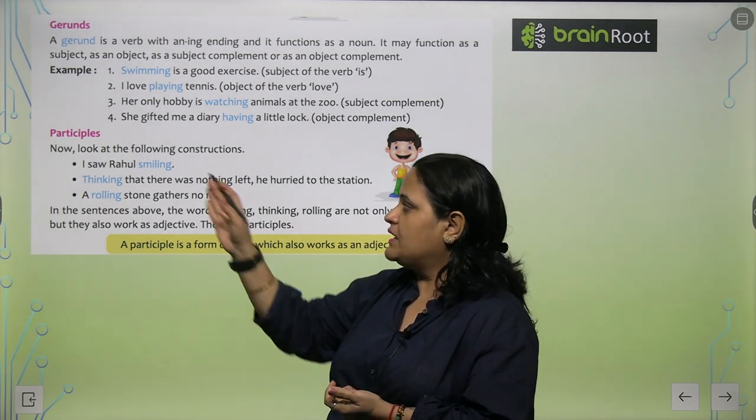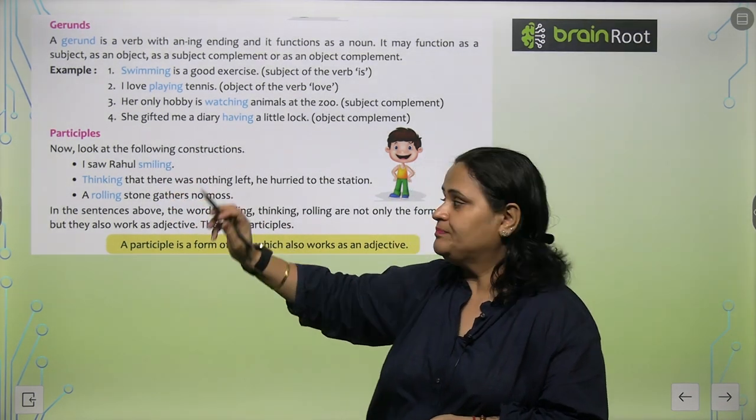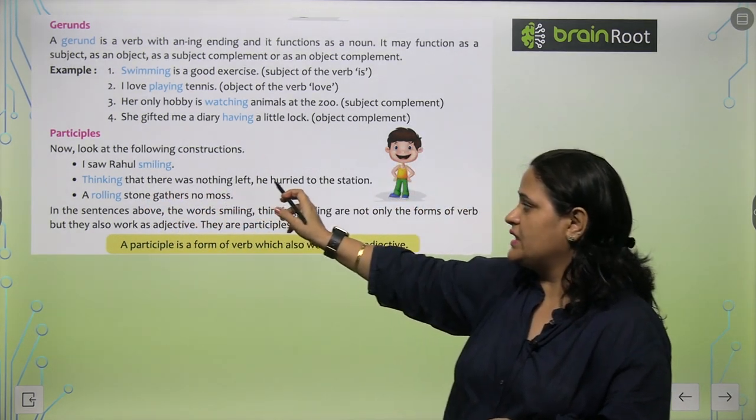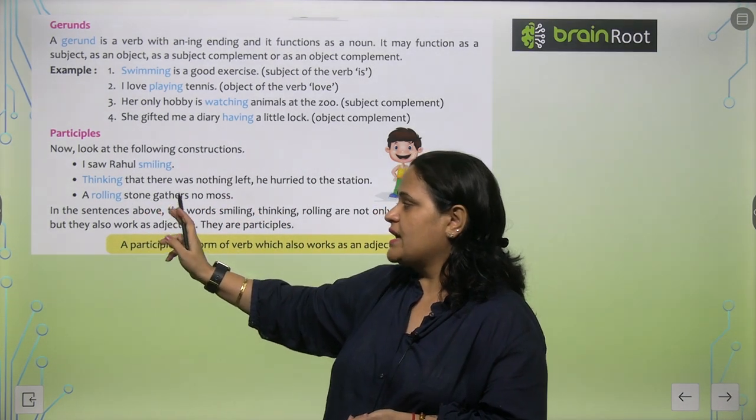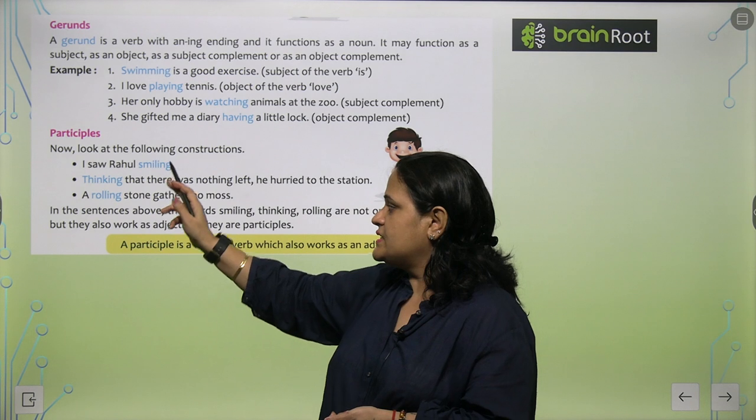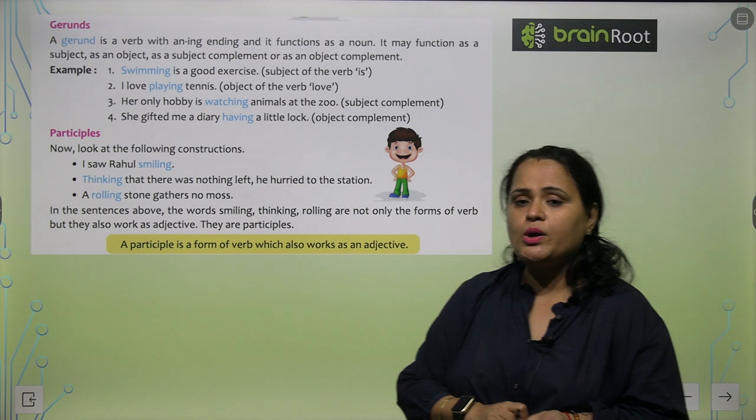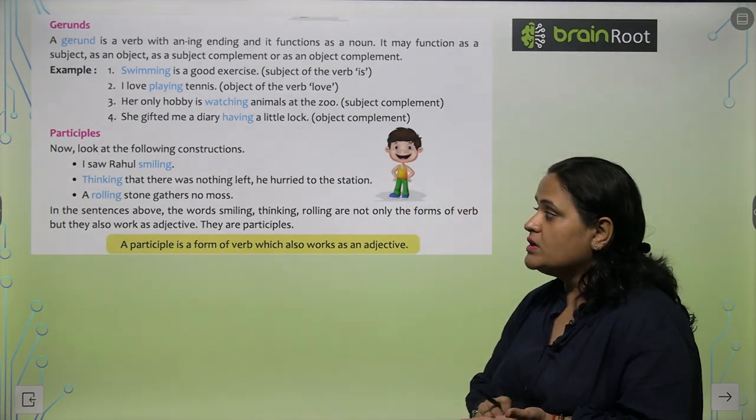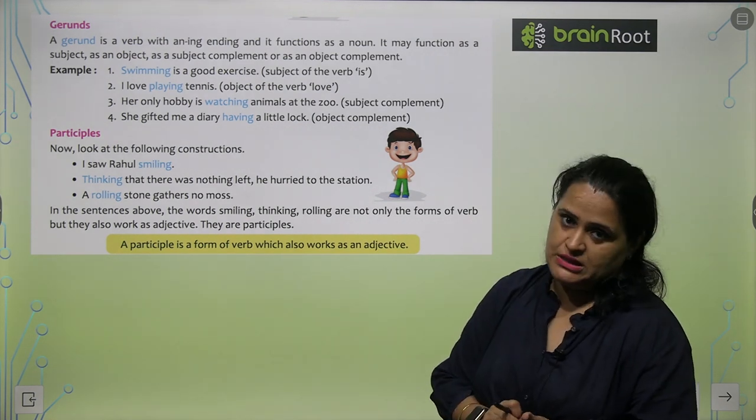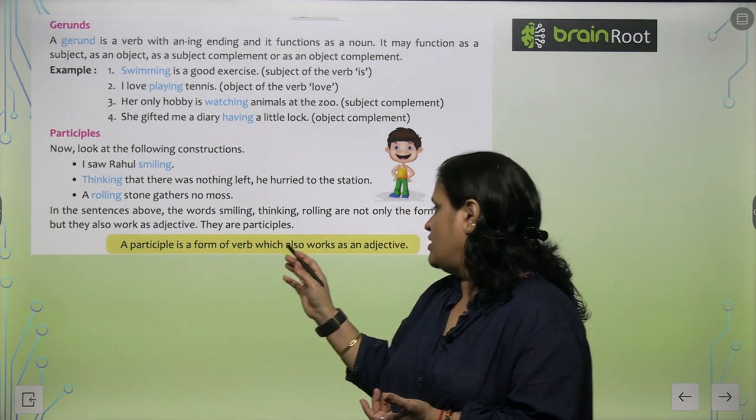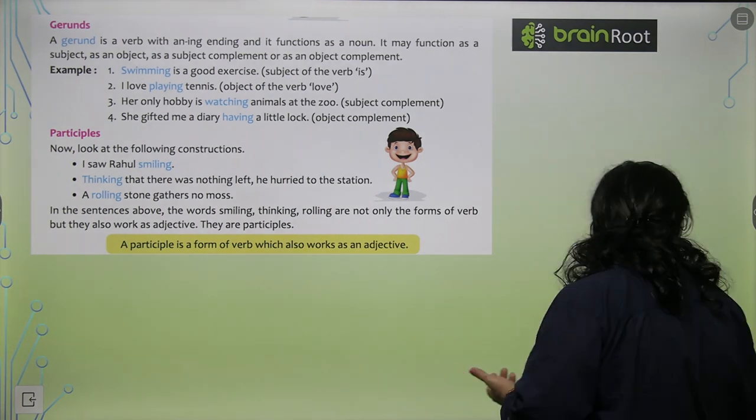Now we come to participles. Look at the following constructions. I saw Rahul smiling. Thinking that there was nothing left, he hurried to the station. A rolling stone gathers no moss. In the sentences above, the words smiling, thinking, rolling are not only forms of verbs but they also work as adjectives. They are participles.